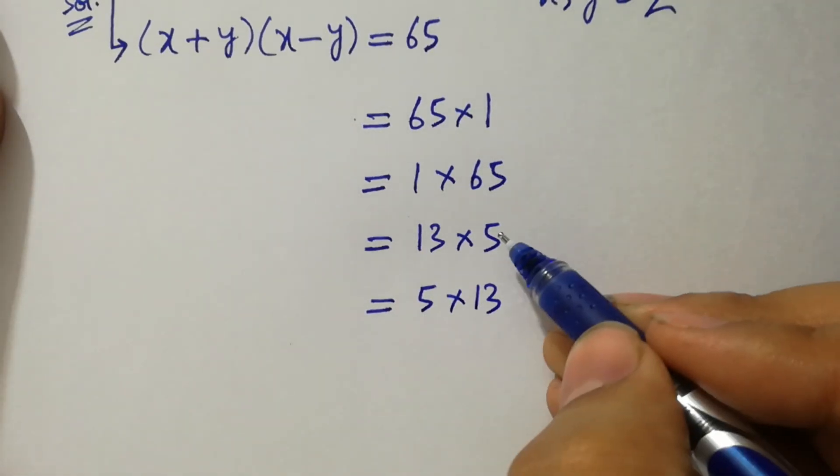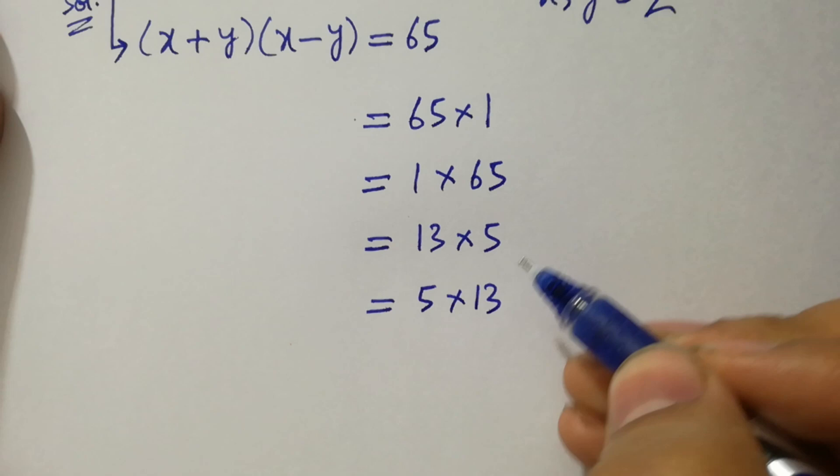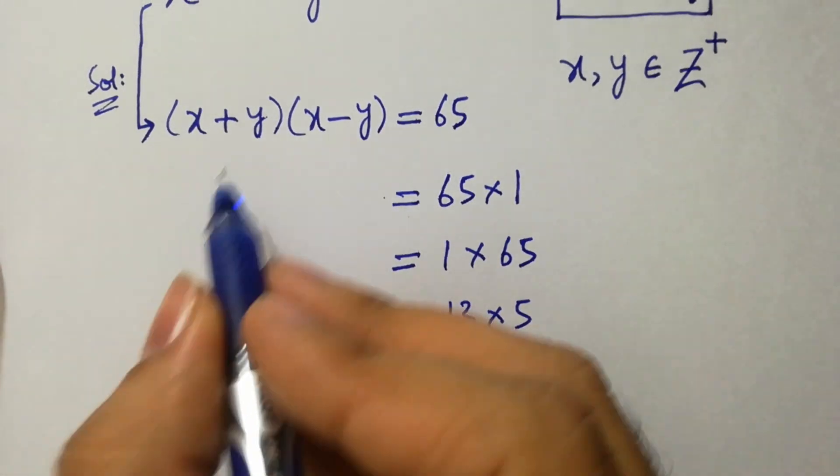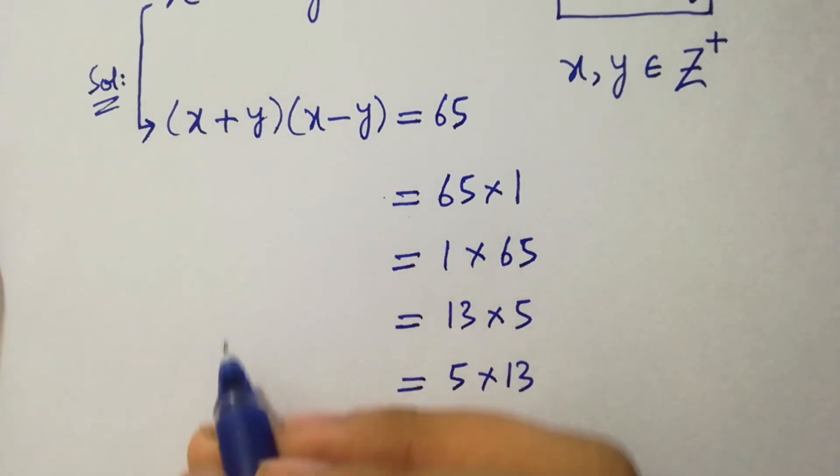So we have here 4 choices by comparison of x plus y and x minus y.